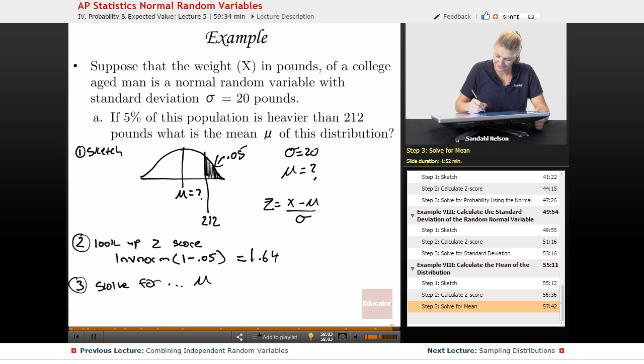So that means we know that z, which is 1.64, equals x, which is 212, minus the mean, which we don't know, divided by the standard deviation, which we know is 20. So we're going to multiply both sides by 20.